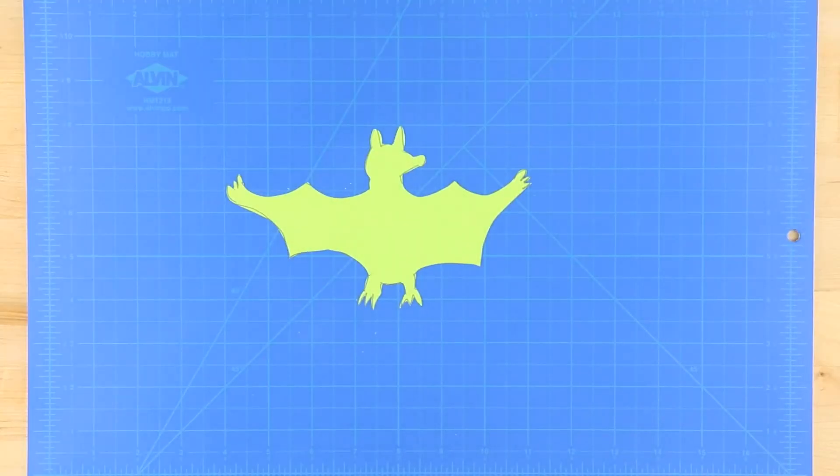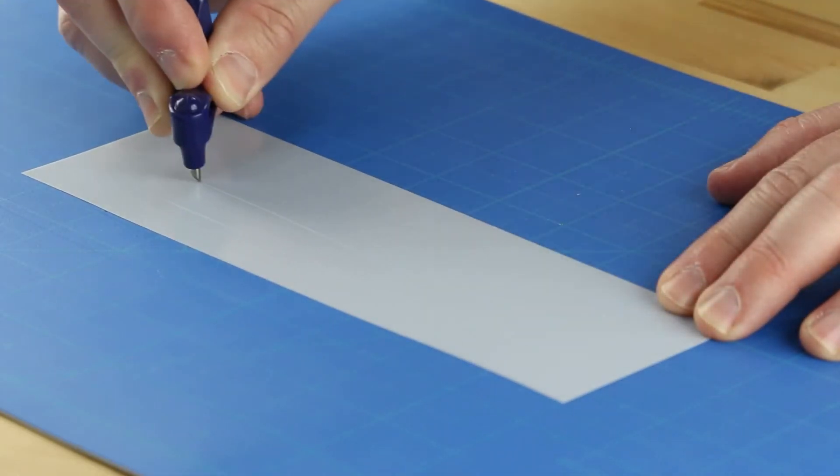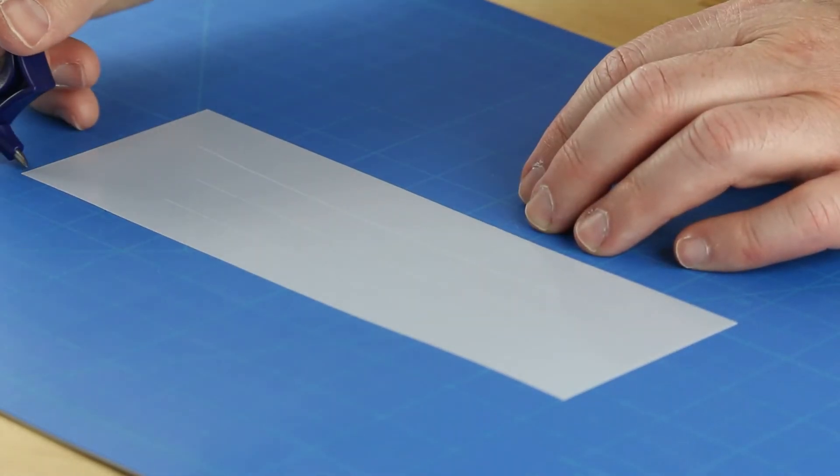For thicker surfaces, such as this 4mm Mylar stencil material, first practice cutting straight lines to determine how much pressure is required to cut through the material.